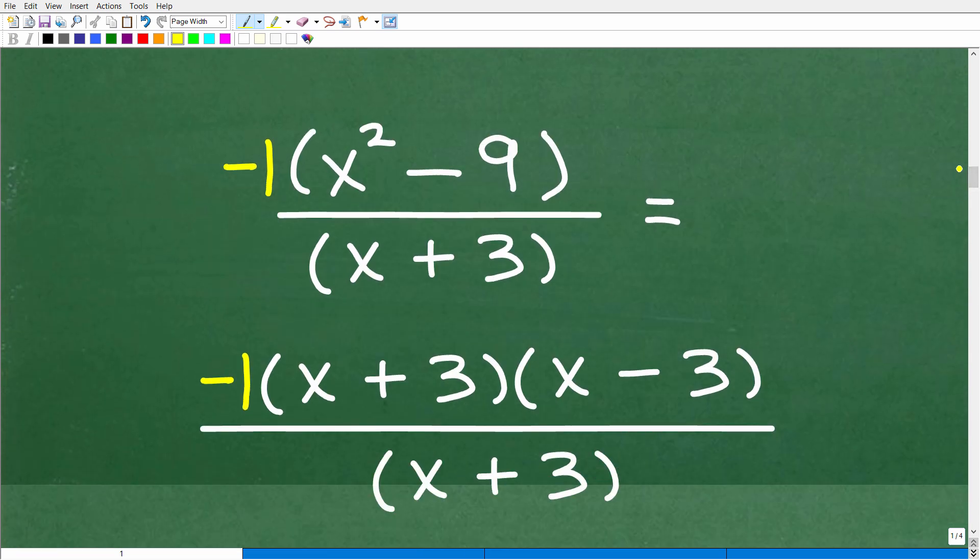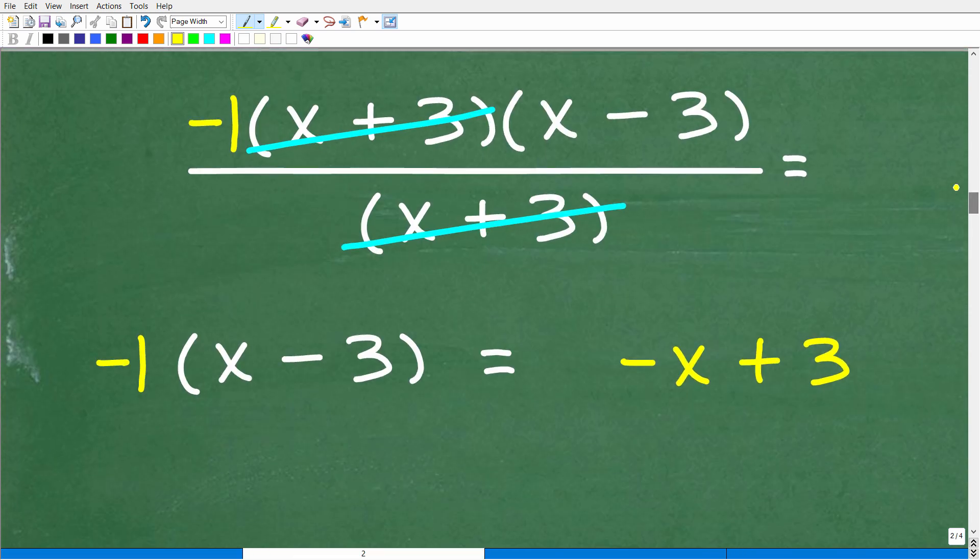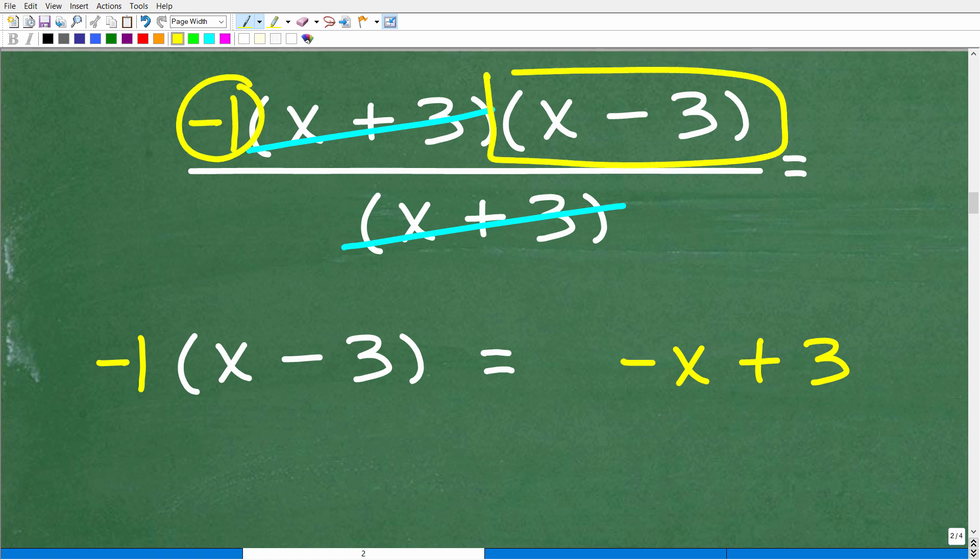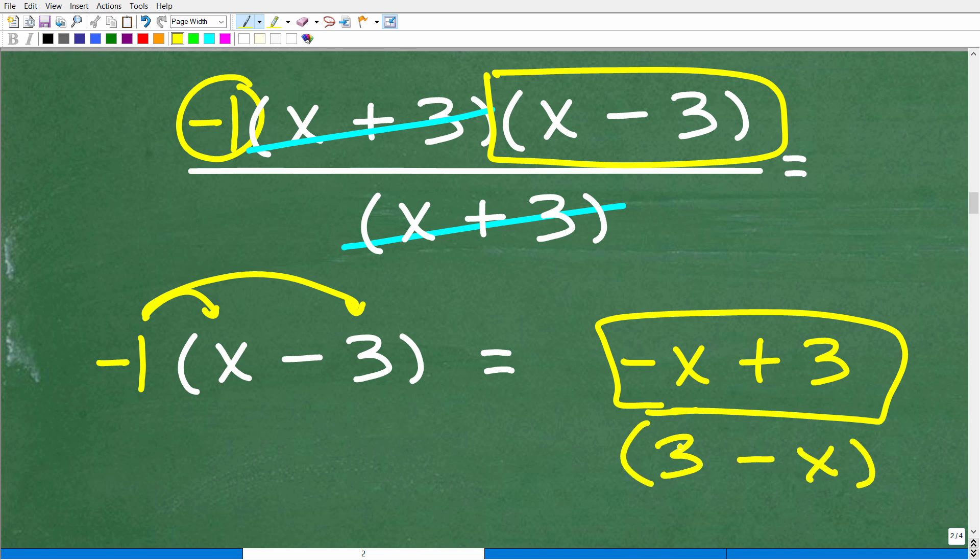Let's continue on here. We factor out this negative one, and by doing this, we can easily use the difference of two squares. x squared minus 9 equals x plus 3 times x minus 3, and we have this x plus 3 in the denominator. We have these like factors—we can cross-cancel these. So we're left with a negative 1 times x minus 3. You don't want to leave your answer like this. Distribute the negative 1 back in: negative 1 times x gives us negative x, and negative 1 times negative 3 gives us positive 3. Or you could rewrite it as 3 minus x. Both expressions are equivalent and correct.